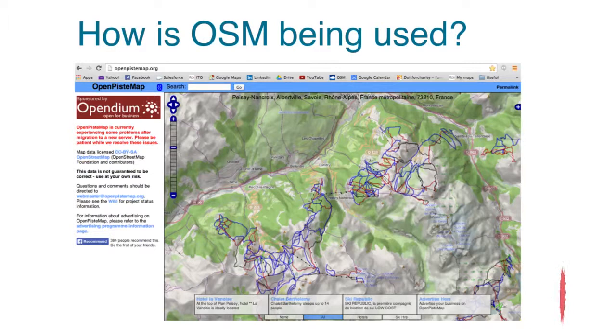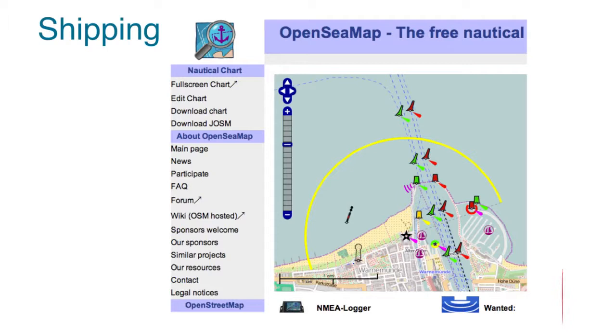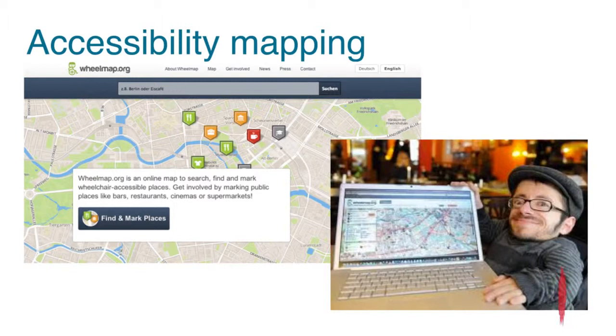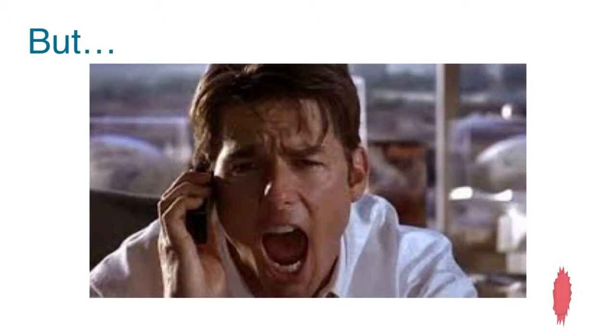OpenStreetMap is being used in many ways: Warwickshire County Council used it to show their election results; there's accessibility mapping led by a chap called Raoul, who started in Germany, providing wheelchair access details for bars, restaurants, and so on.